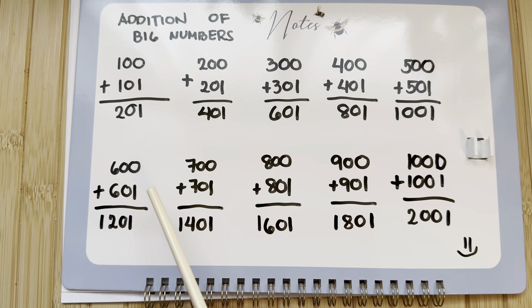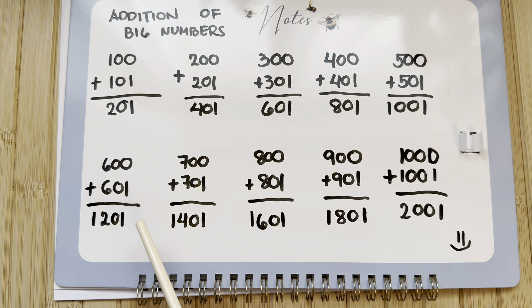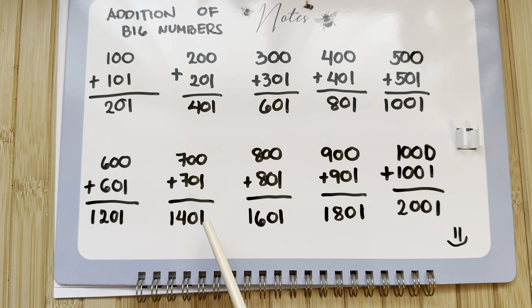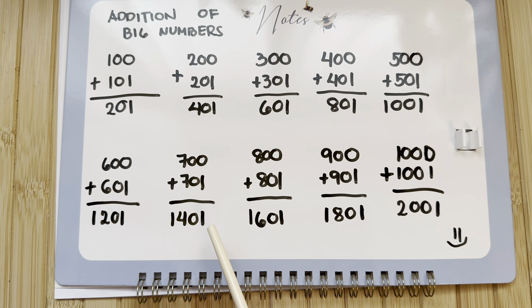Next, let's try 600 plus 601 equals 1,201. 700 plus 701 equals 1,401.